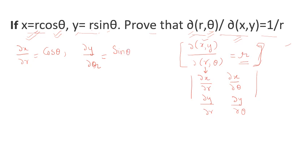Partial differentiation of x with respect to theta: r is treated as constant, and the differentiation of cos theta is minus sine theta, giving minus r sine theta. Partial differentiation of y with respect to theta: r is constant, and the differentiation of sine theta is cos theta, giving r cos theta.